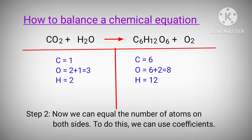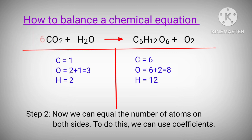Step 2: now we can equal the number of atoms on both sides. To do this we can use coefficients. In this equation, the right hand side has six carbon atoms and the left hand side has one carbon atom, so to balance this we can use the coefficient of 6 in front of CO2.